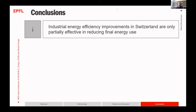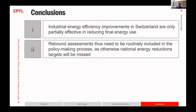To conclude: industrial energy efficiency improvements in Switzerland are only partially effective in reducing final energy use. This means that rebound assessments really need to be routinely included in the policymaking process, as otherwise national energy reduction targets will be missed, and given the urgency this could be quite detrimental.